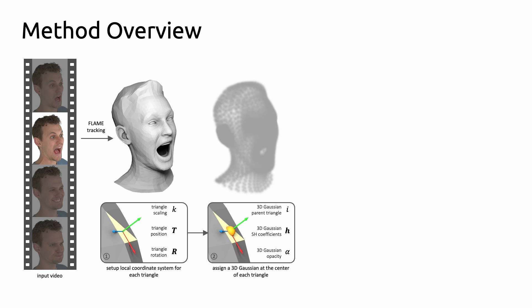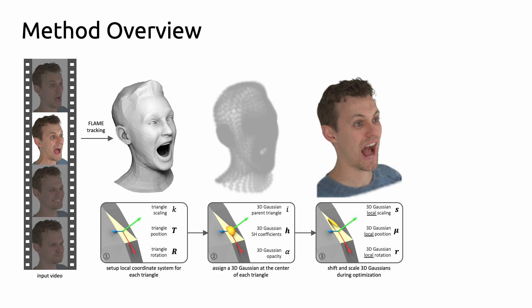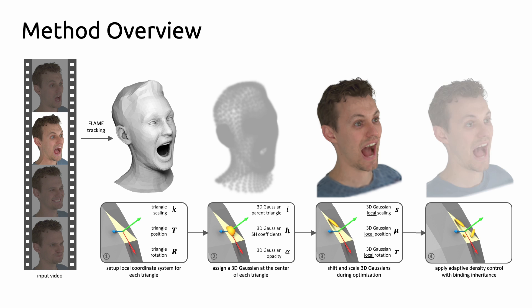We render the Gaussian splats and use color loss to optimize their color and opacity. We further optimize each Gaussian splat's local scaling, position, and rotation to obtain a more accurate geometric representation. We introduce a binding inheritance strategy that allows us to densify and prune Gaussian splats, ensuring the highest fidelity without losing controllability.